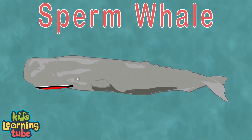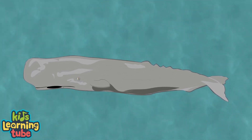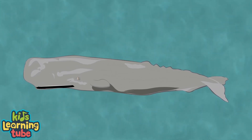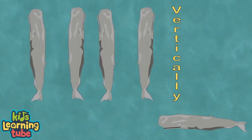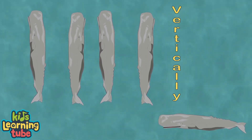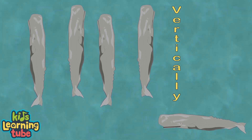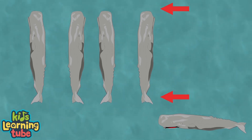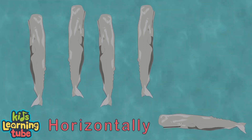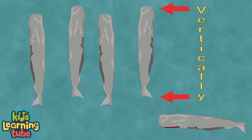I'm a sperm whale — have you ever wondered how I sleep? Sperm whales sleep kinda funny: we sleep vertically, not horizontally like most mammals. Vertical means the top is above the bottom — and that's how a sperm whale rests in the sea.